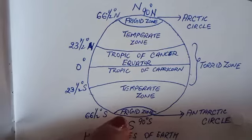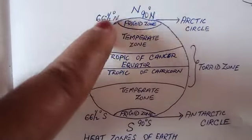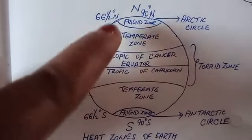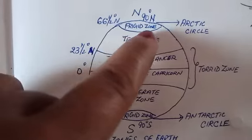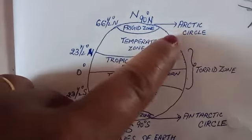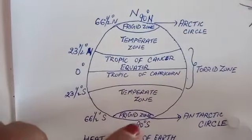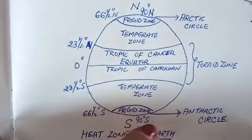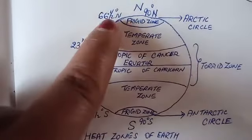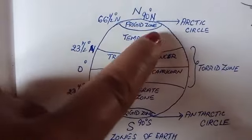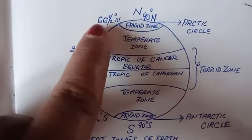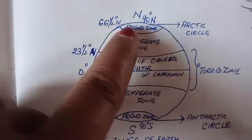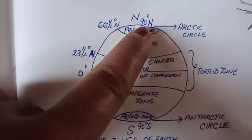Near the south pole and north pole, both frigid zones are present. These are also known as the Arctic Circle at the north pole and the Antarctic Circle at the south pole. The Arctic Circle frigid zone is present between 66 and a half degree north to 90 degree north.